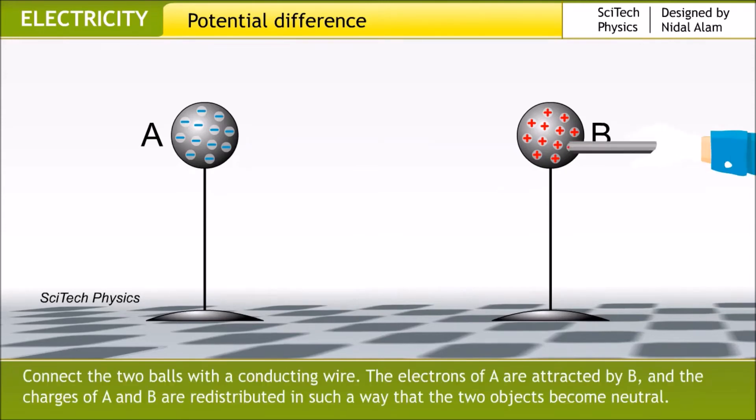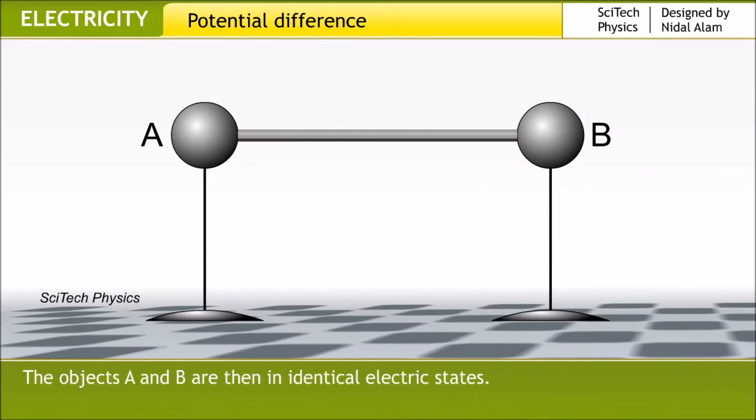Connect the two balls with a conducting wire. The electrons of A are attracted by B, and the charges of A and B are redistributed in such a way that the two objects become neutral. The objects A and B are then in identical electric states.